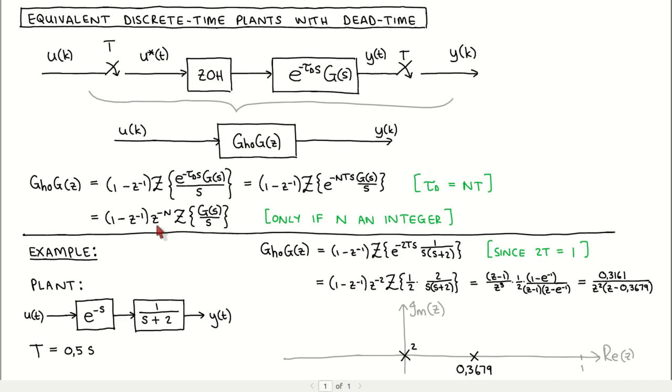Let's now work through a simple example to illustrate the idea. Consider the continuous time plant given by the transfer function 1 over s plus 2 and a time delay of one second. The sampling period is half a second.